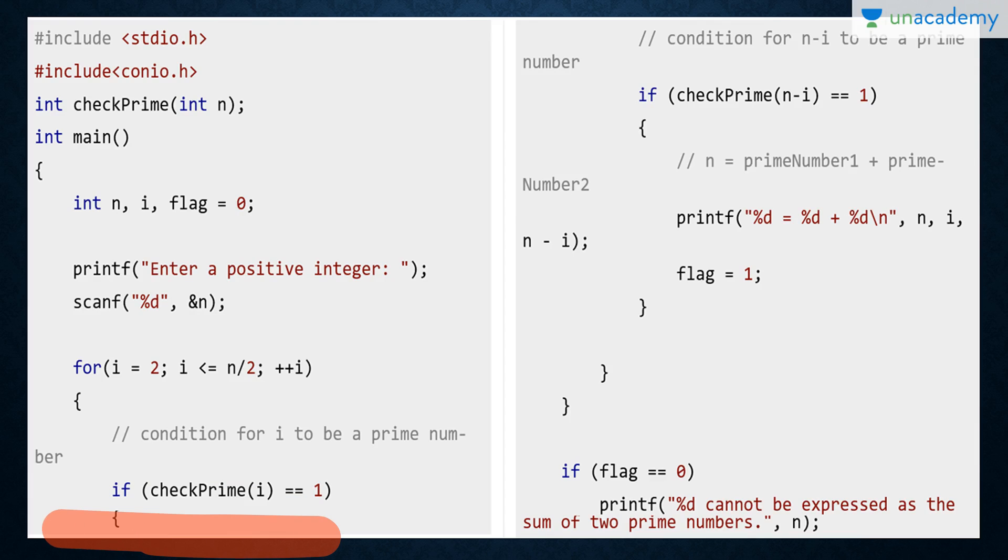Here, if our number is 1, it means our number is prime. So check n minus i. That is our limit. Suppose 5 is our prime number and 7 is our limit. So 7 minus 5 is 2. Is 2 equal to 1? No. So nothing happens, your flag will be 0. Else, we can print this - that is, the sum of 2 prime numbers. It is simple. What do we have to do? Write a loop in the limit, check if it is prime or not. If n minus i is 1, it cannot be expressed as sum of 2 prime numbers.